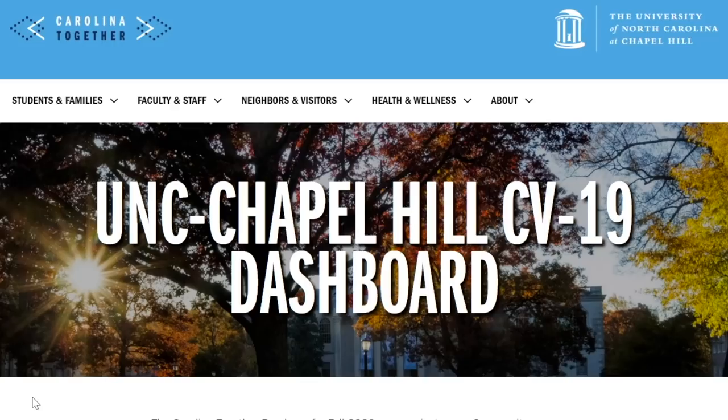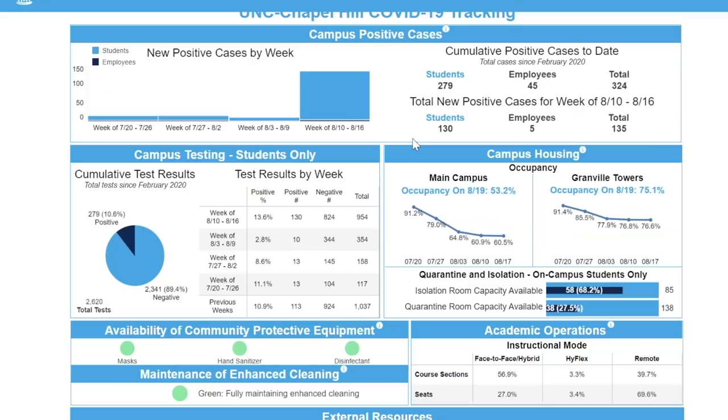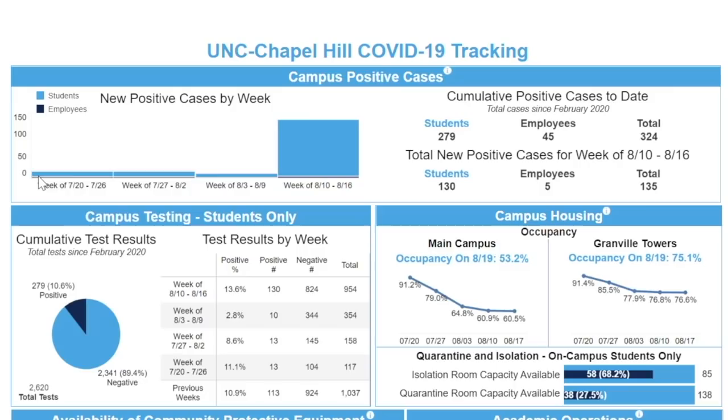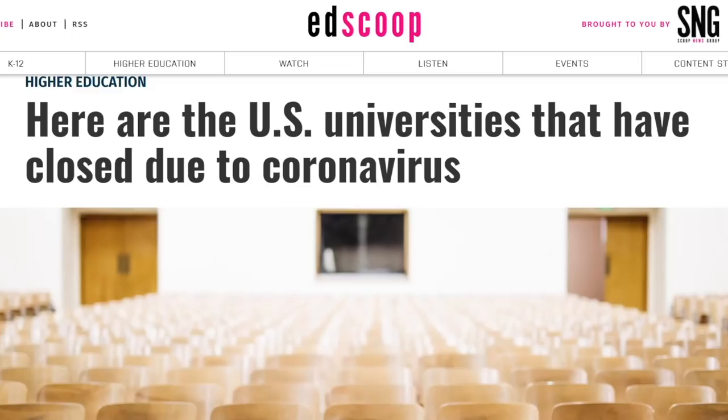If you go to UNC's own dashboard on coronavirus COVID-19, you'll see that total cumulative positive cases to date since February 2020 is 279, with 130 of those being in just the week of August 10 to August 16.